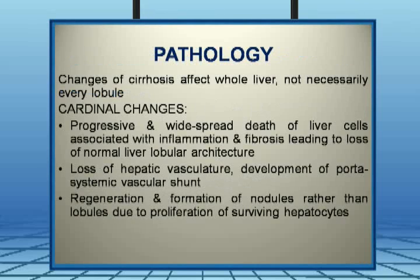Now coming to the pathology: the changes of cirrhosis affect the whole liver but not necessarily all the lobules — this is a key point to remember. Sometimes you may ask why there is still liver functioning if there is cirrhosis and fibrosis; that's because some lobules would still be functioning. The cardinal changes include progressive widespread death of hepatocytes associated with inflammation, fibrosis leading to loss of normal liver lobular architecture.